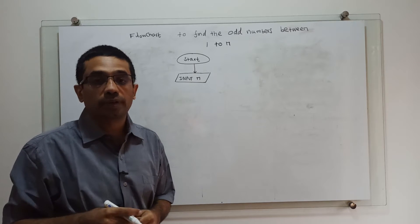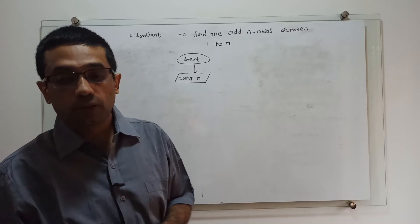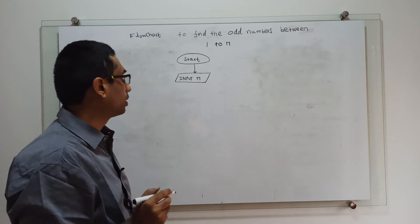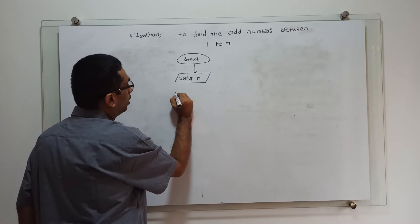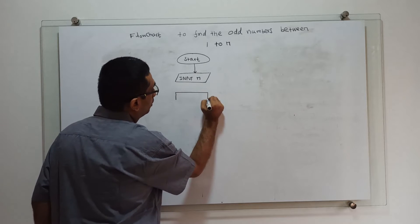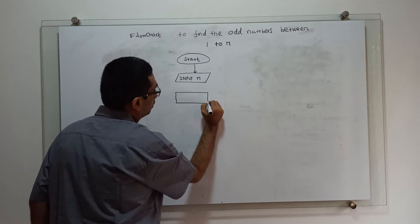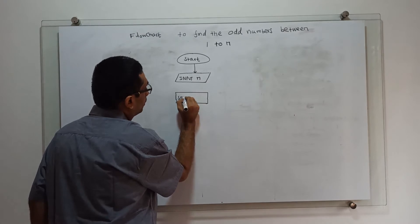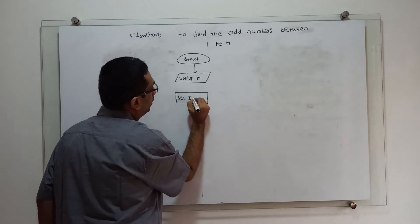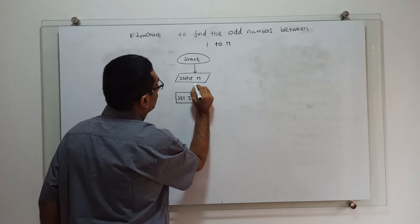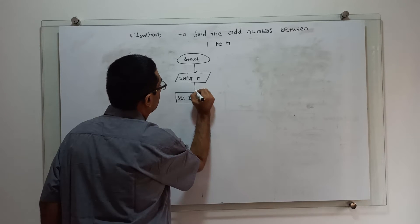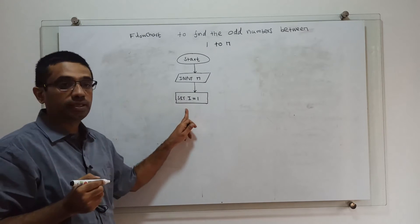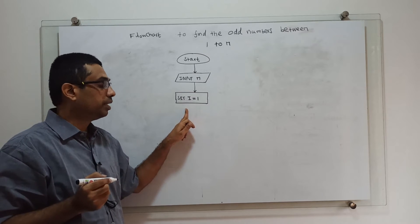Next, we need a loop counter variable. I have to set the loop counter variable i equal to 1. I am setting my loop counter variable i equal to 1.